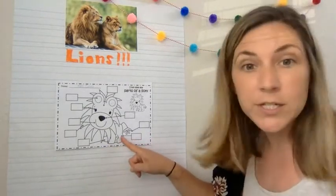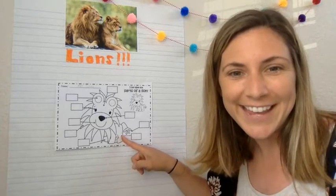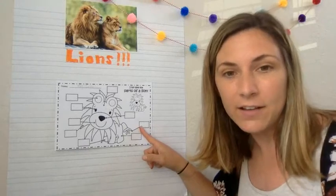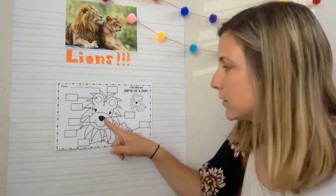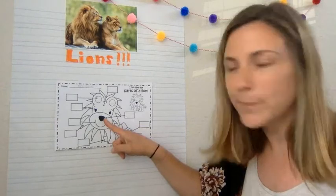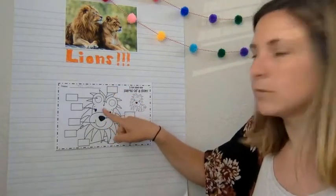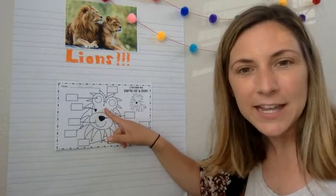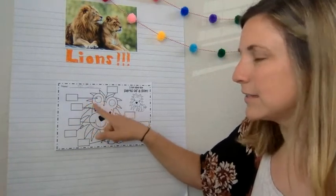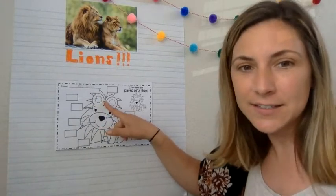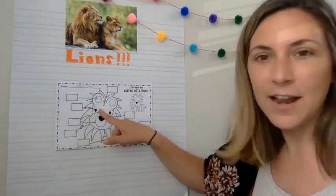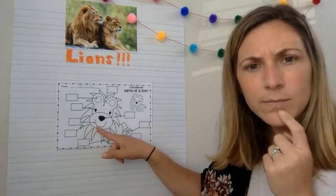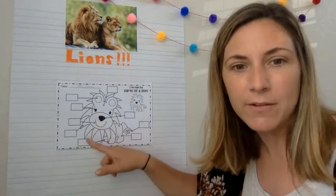Maybe this one is pointing to his tail. Pointing all the way over to his nose. What could this one be? His head. Yeah, pointing to the lion's head. The lion's ears and their eyes pointing to his smile or his mouth. We'll have to look for that one.